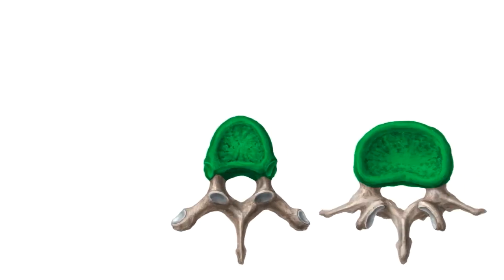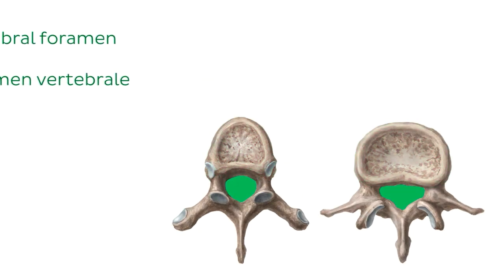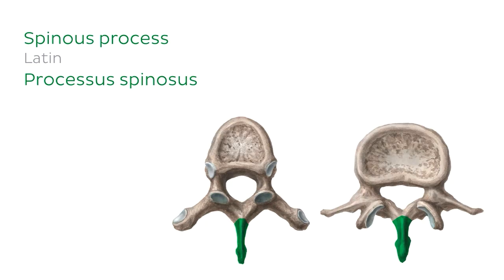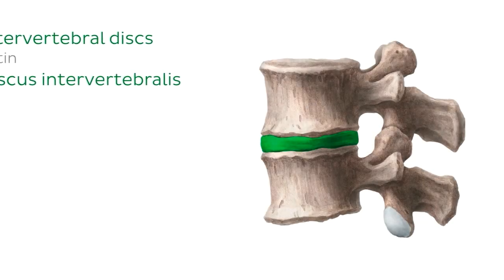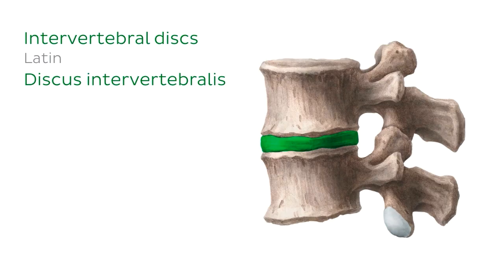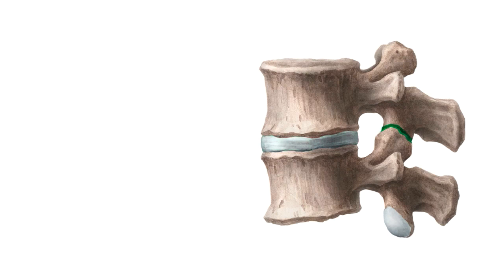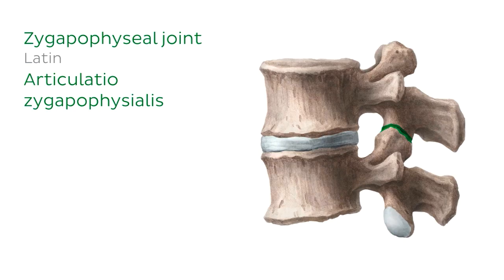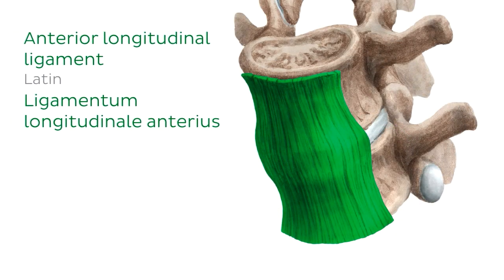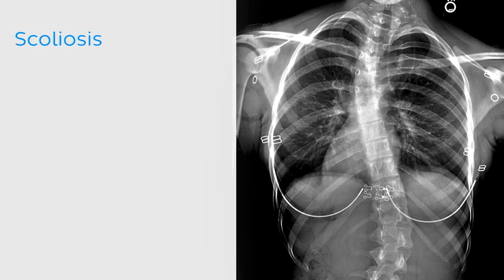Before we bring our tutorial to a close, let's quickly summarize what we've learned today. We started by looking at the bony structures of the thoracic and lumbar vertebrae, seeing that we can distinguish between them using the vertebral body, the vertebral foramen, the spinous process, and the articular facets. We then looked at the intervertebral discs, followed by joints and ligaments including the zygapophyseal joint and the anterior longitudinal ligament. Finally, we concluded with clinical notes on the thoracic and lumbar spines. That brings us to the end of our tutorial — I hope you enjoyed it, thanks for watching, happy studying!